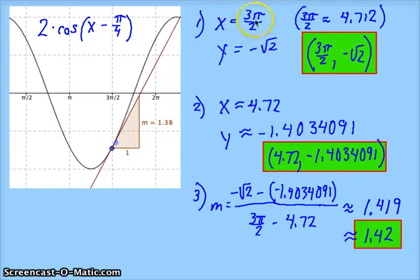Correction. When we do put 3π over 2 into this function, we get negative square root 2. How did I get 4.72? 3π over 2 is approximately 4.712. So 4.72, if it helps to put the 0 here if you need to, I would hope that you would say that they are very close. Plugging this new x into our function, I get this new y. Don't round too early. Calculate your slope using a slope formula, change in y over change in x. And I find that an estimate of this slope is about 1.42.